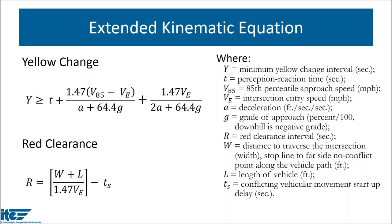The extended kinematic equation was developed to take into account the slowing that occurs during turning movements as vehicles approach an intersection. It uses pretty much the same variables as the traditional kinematic equation but with a somewhat different formulation. The biggest change is the addition of a term in the center of the equation, which along with a slight reformulation of the third term accounts for the slowing that takes place during turning movements.